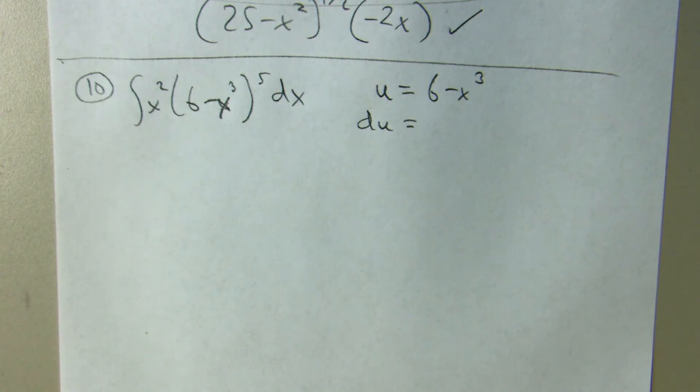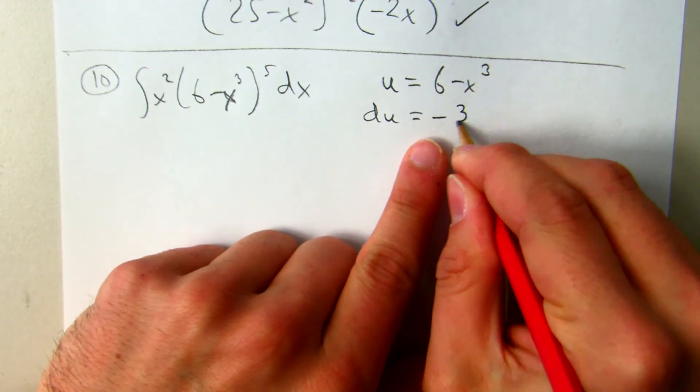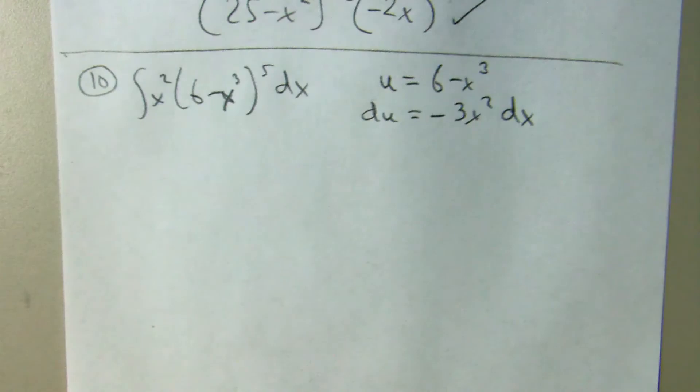Again, you don't really know for sure until you try it and see that it works. Okay, so du then would be like the derivative, the derivative of u over dx.